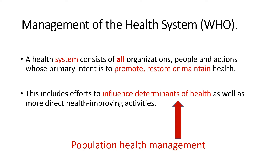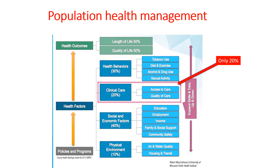The World Health Organisation describes health system management as being the activity undertaken by all organisations with the primary intent to promote, restore or maintain health. Population health management starts with the recognition that clinical care provides no more than 20% contribution to overall health outcomes, judged by length and quality of life. Health behaviours, social and economic factors, together with the physical environment, contribute the remainder. These are all health determinants.